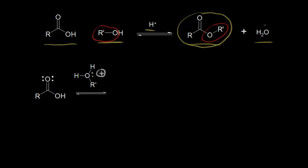One thing you could do would be to decrease the concentration of water, which would shift your equilibrium to the right to make more of your ester. You could also increase the concentration of the alcohol, and that would shift the equilibrium to the right as well.